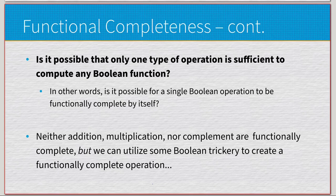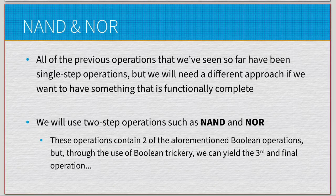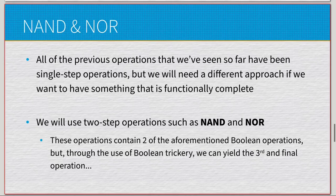Everything we've looked at so far — addition, multiplication, complement — none of these are functionally complete by themselves. However, we can use some Boolean trickery and different variations of logic to create new operations, or take existing operations and see if they might be functionally complete. Two come to mind: NAND and NOR. All previous operations were single-step; NAND and NOR are two-step operations.